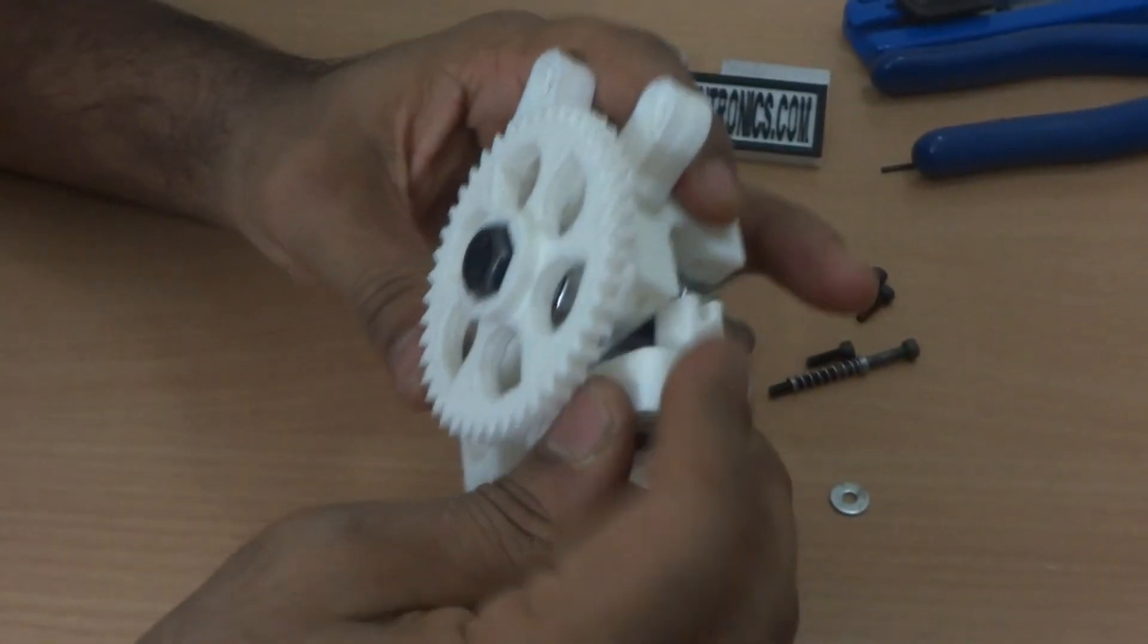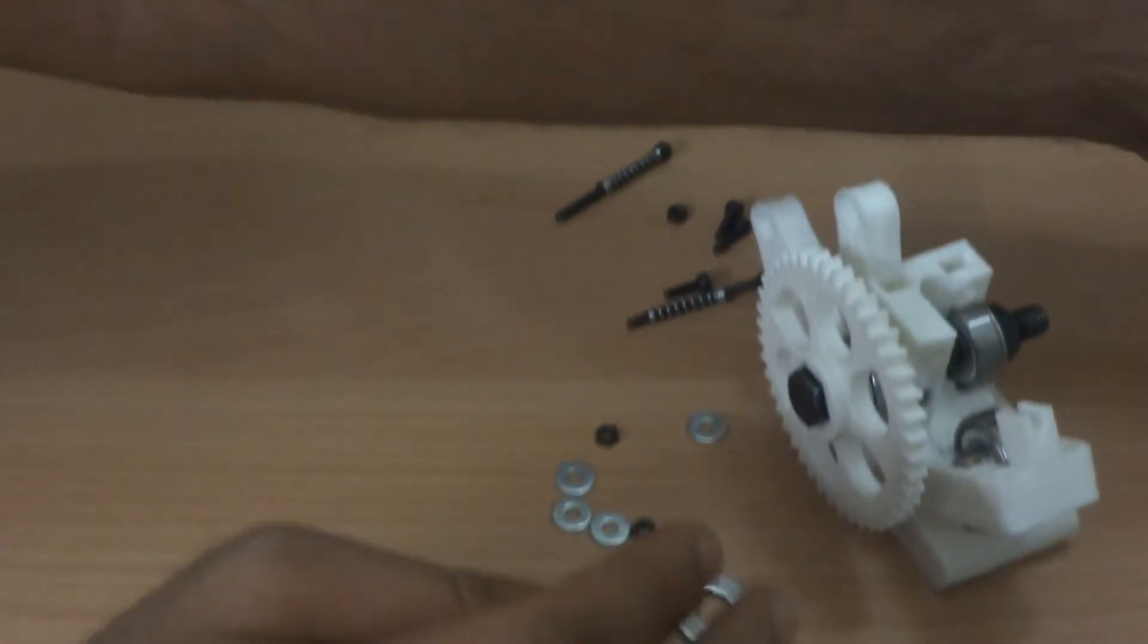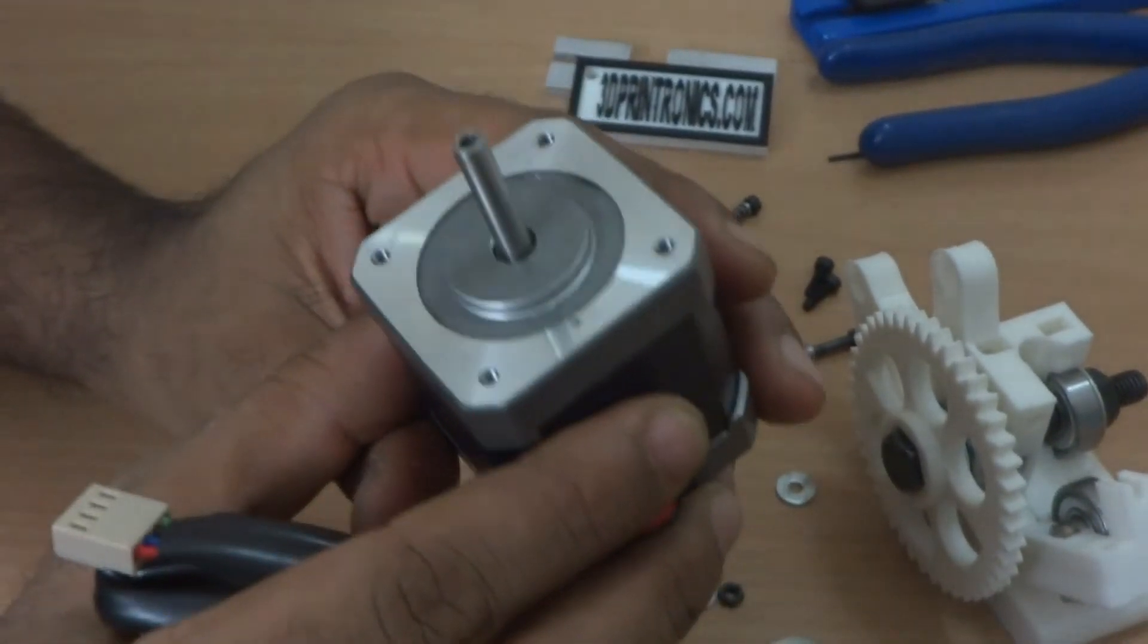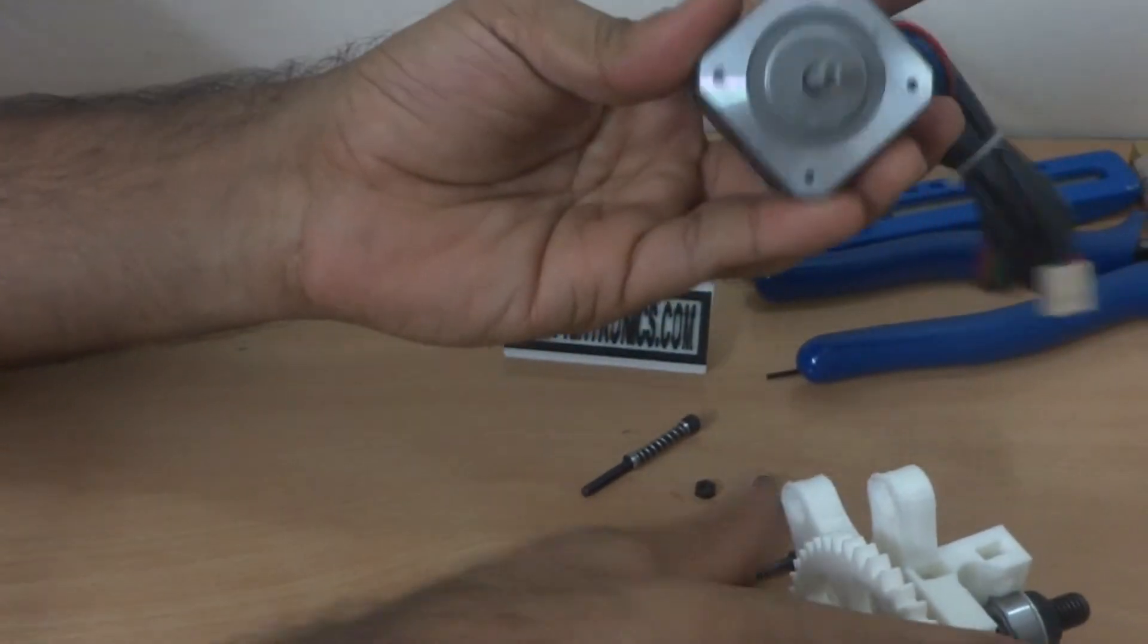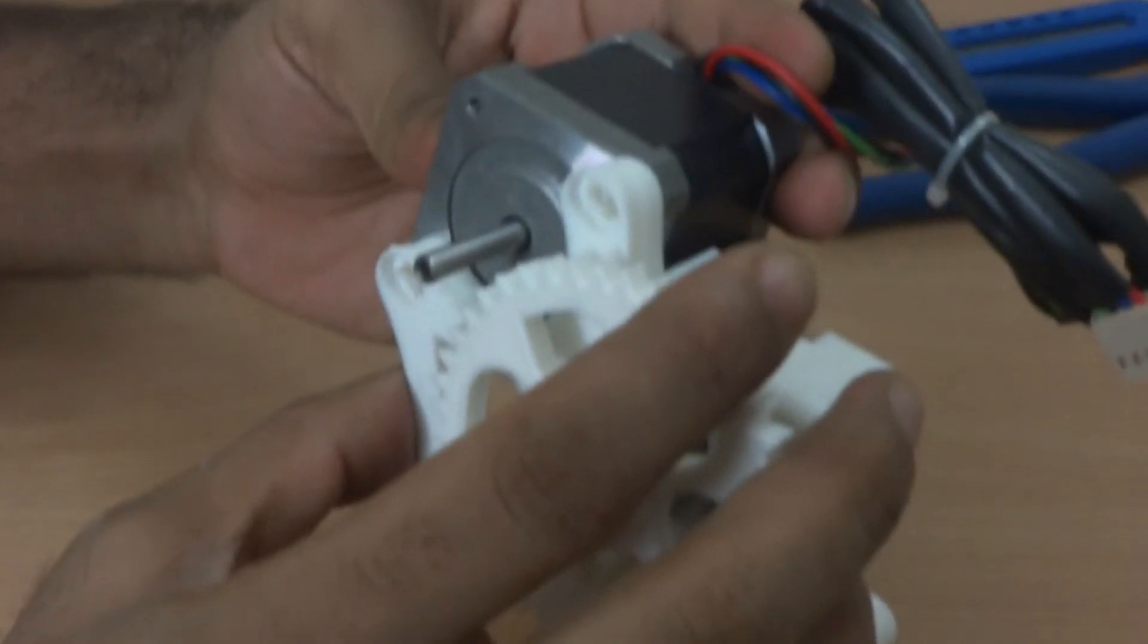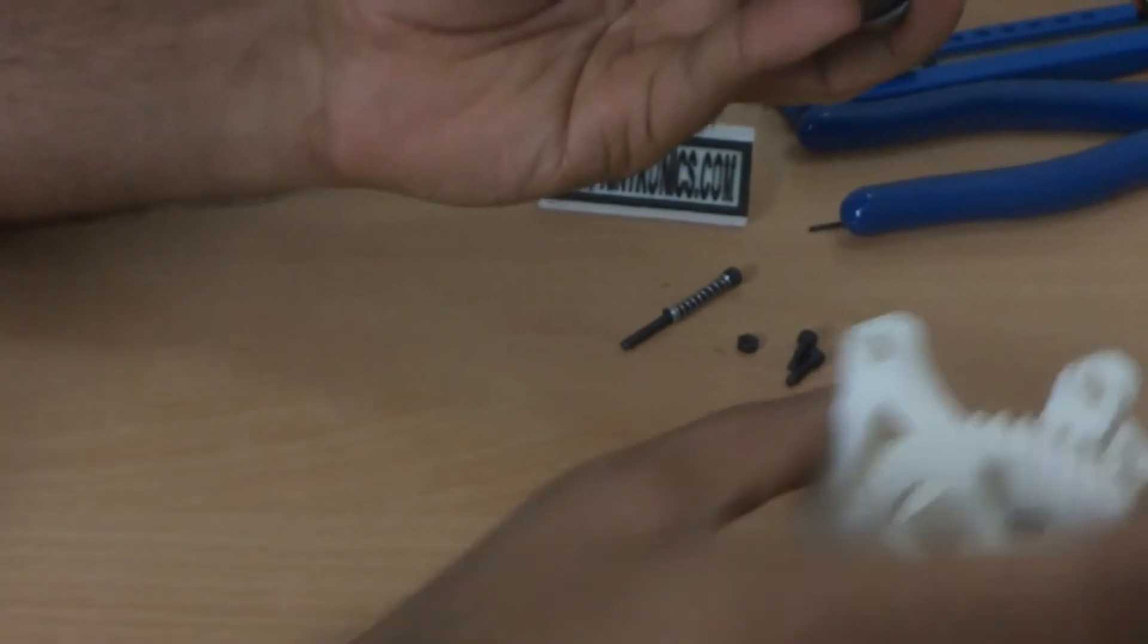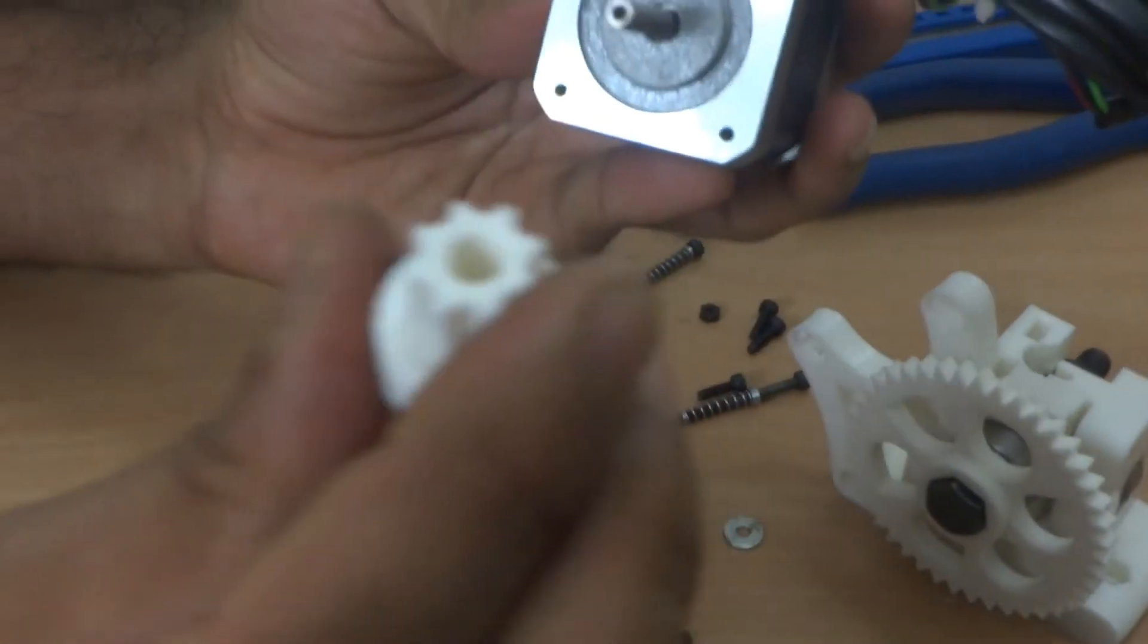Now we need to install the NEMA 17 motor. So this is the NEMA 17 motor which if you order with the kit will come otherwise you can order it separately also. This NEMA 17 motor will be installed from this direction. Before you install the NEMA 17 motor, we will install the small gear on the NEMA 17 motor. So this is the small gear.